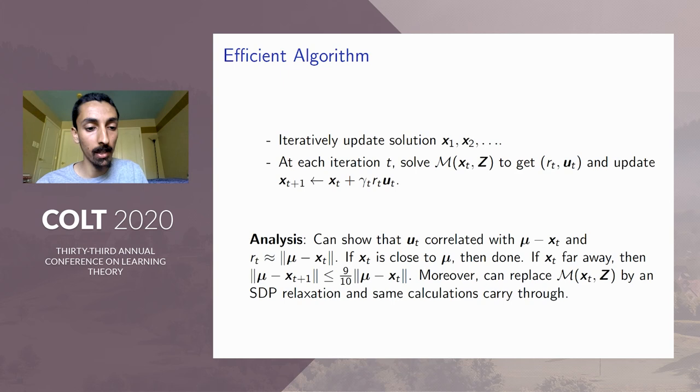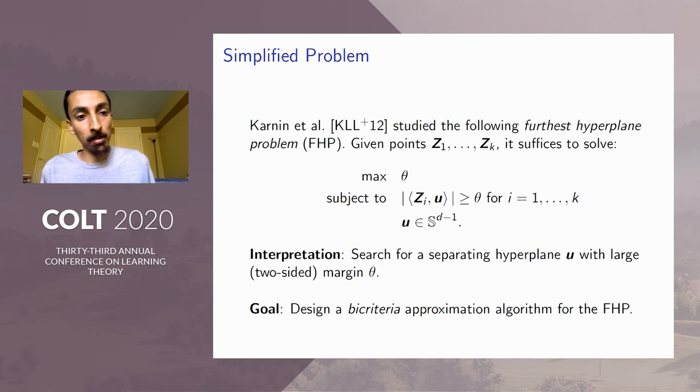So in order to get a faster algorithm, our main contribution is to show how to do without this semidefinite program. In particular, we'll design essentially a direct approximate solver for this inner maximization problem. So our main step is to simplify the problem, to simplify this inner maximization problem to what's called the furthest hyperplane problem. So in this problem, which was studied by Karnin et al. in 2012 in a different context, we're basically given k points, z_1 to z_k,